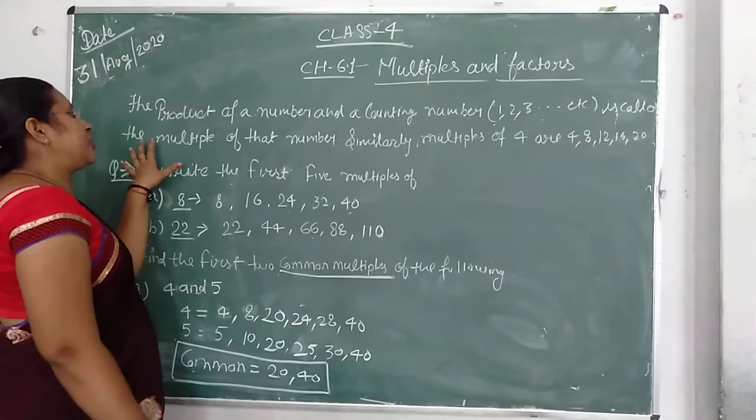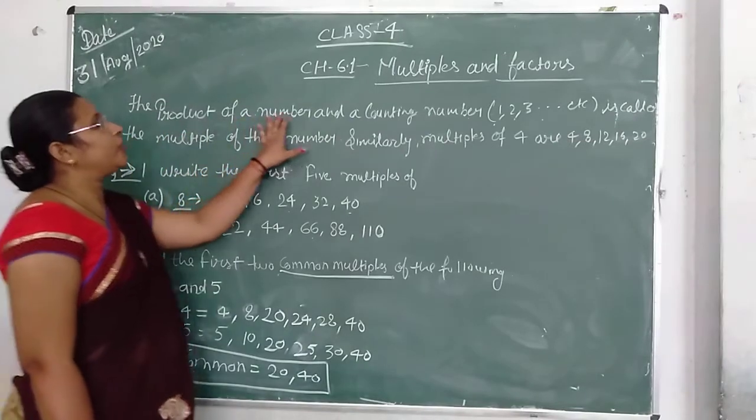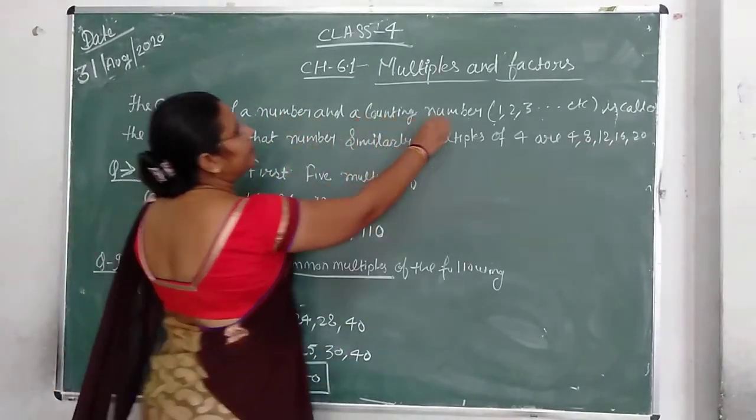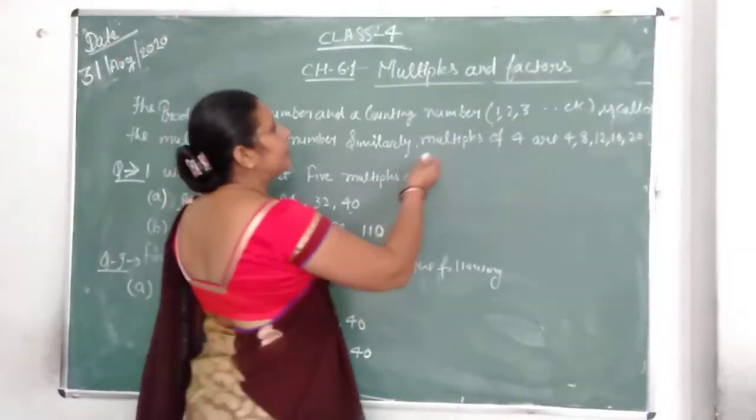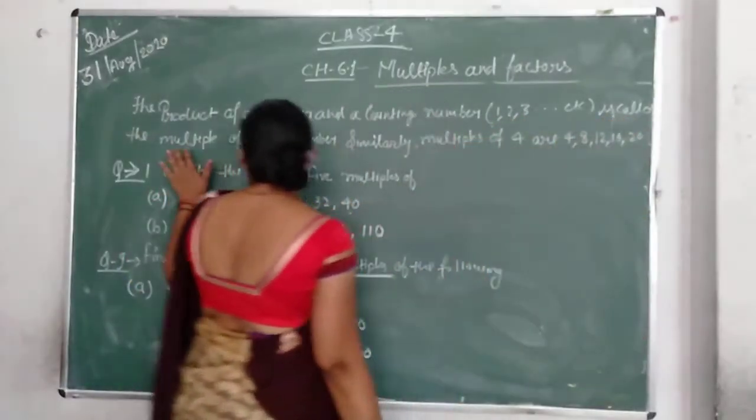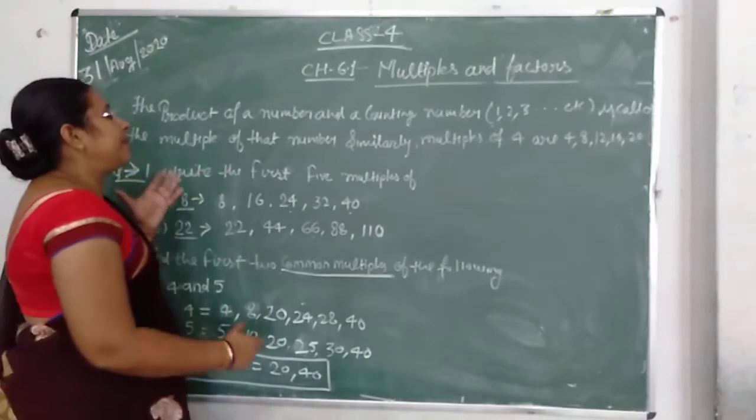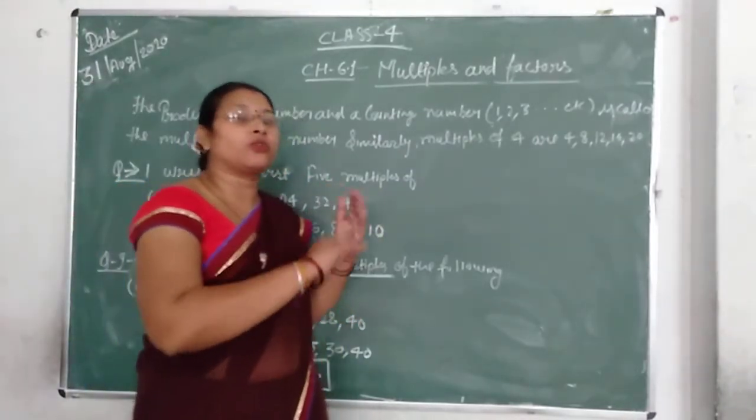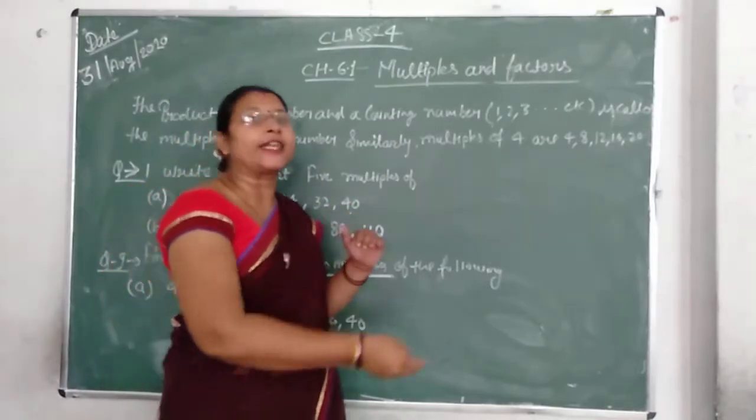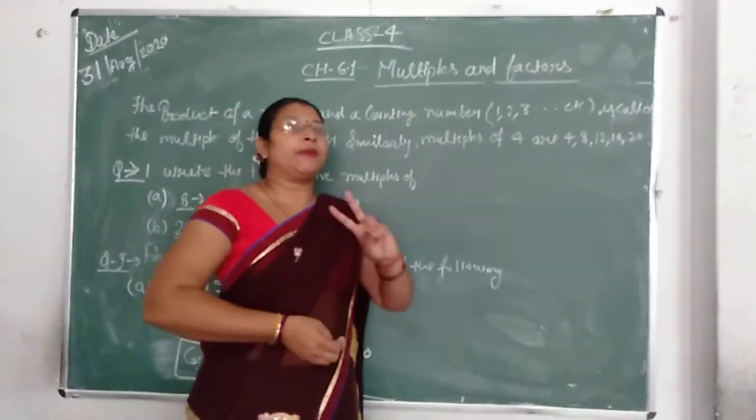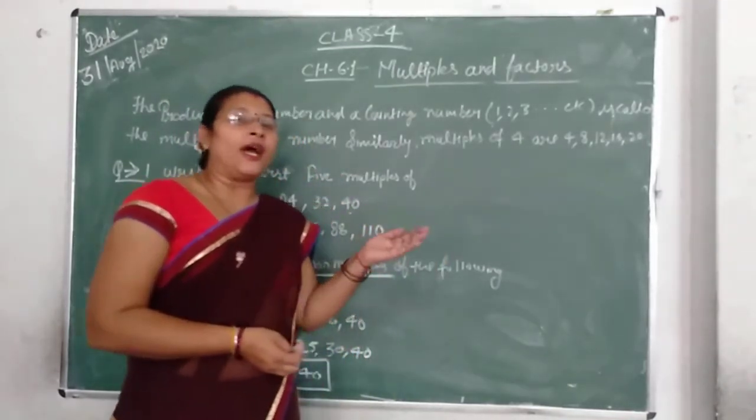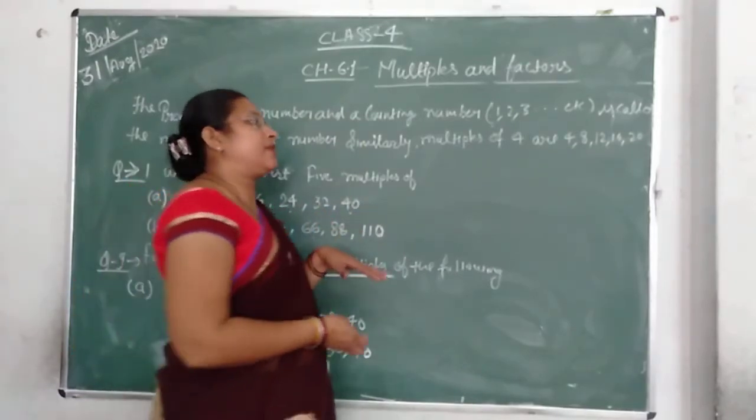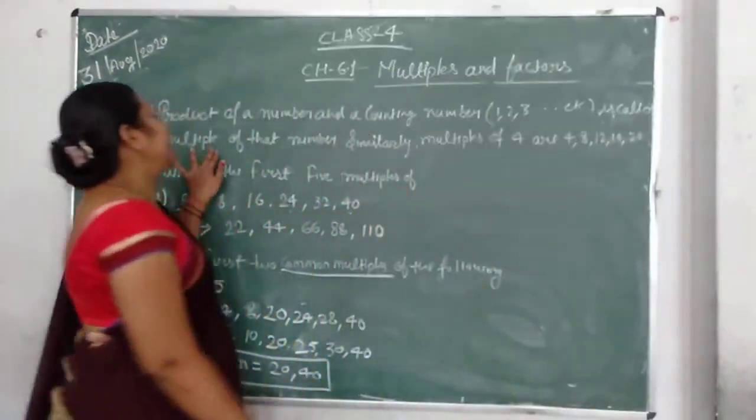Okay, first of all, the definition. The product of a number and a counting number - counting numbers 1, 2, 3 - is called a multiple of that number. When you take two numbers and multiply them, or when you use a table, if that number is divisible, it's called a multiple.